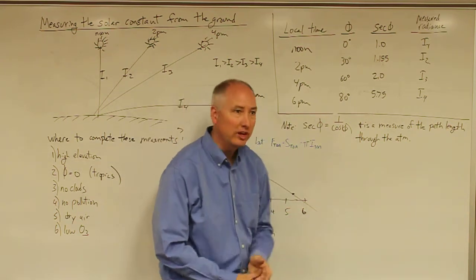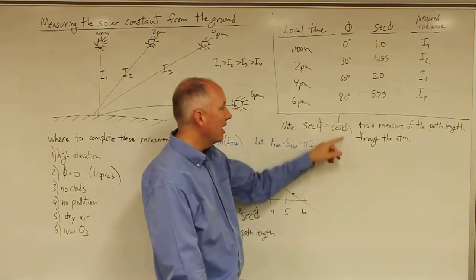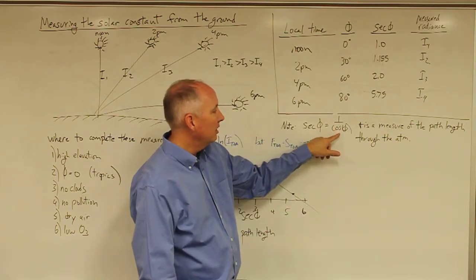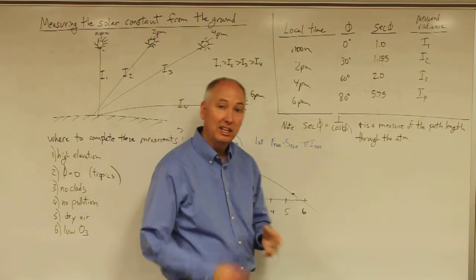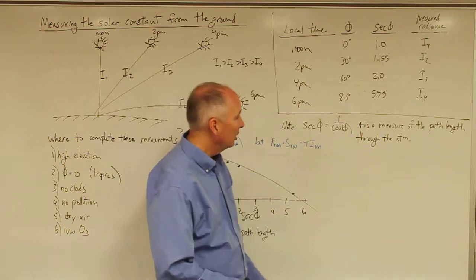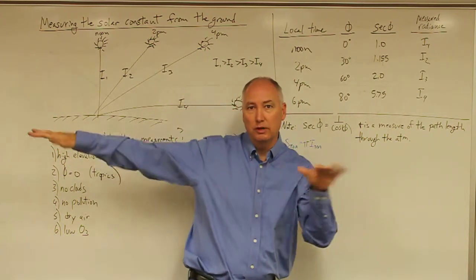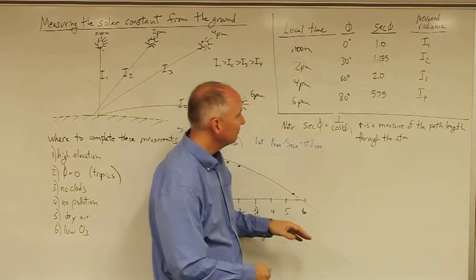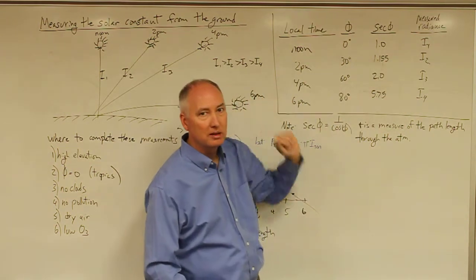If you take it to its extreme of the Sun being at 90 degrees, basically being on the horizon, then the cosine of the zenith angle of 90 is equal to zero and you end up with an infinitely long path length. So that's just showing that the radiation is being spread over an infinite surface at that angle. And then we have our measured radiance at each one of those times throughout the day.